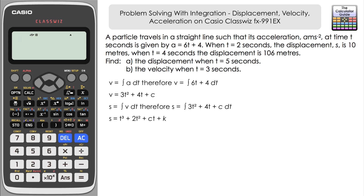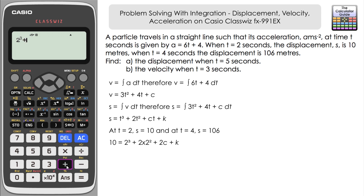Now let's use the information we know about displacement at two specific times. At t = 2 seconds, s = 10, so we substitute those values into the displacement equation: 10 = 2³ + 2(2²) + 2c + k. Simplifying, 2³ + 2(2²) = 16. Taking 16 away from 10 gives negative 6, so we simplify the equation to 2c + k = -6.